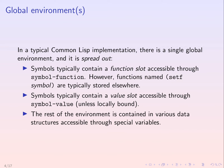In a typical Common Lisp implementation, there is one single global environment and it's not concentrated — it's spread out. Part of it is contained as slots in symbols. For example, a symbol typically contains a function slot accessible through the function symbol-function. A symbol will also typically contain a value slot which contains the global value or current value, accessible through the function symbol-value.